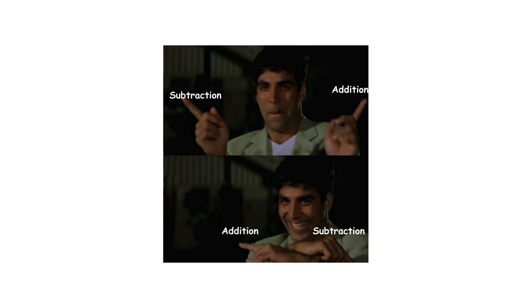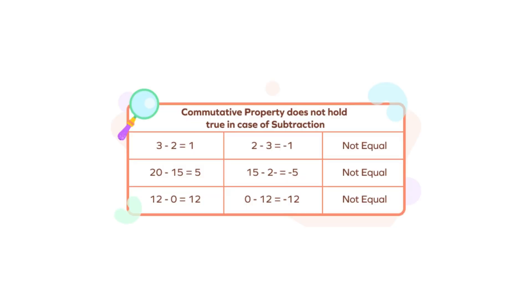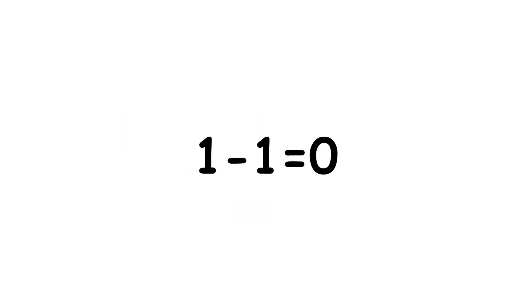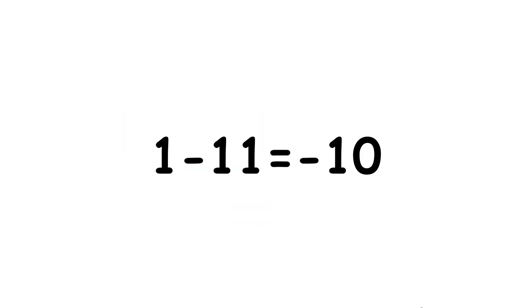Subtraction is the inverse of addition. Unlike addition, it is neither commutative nor associative. Any number minus itself is zero, and a number minus a larger number equals a negative number, a number less than zero.